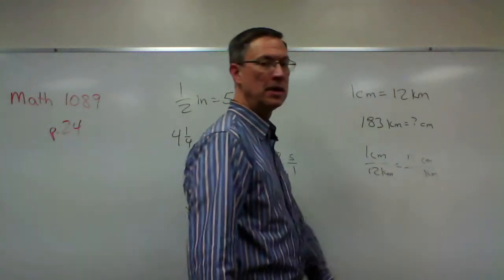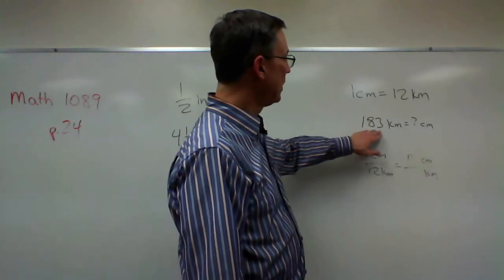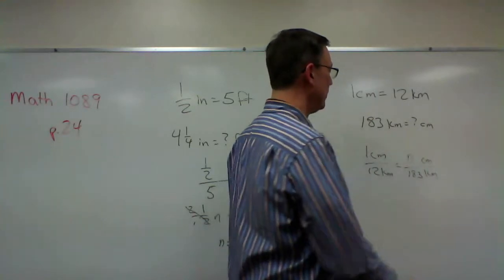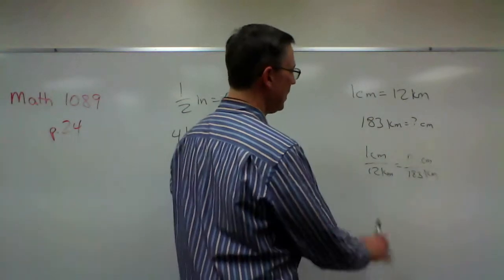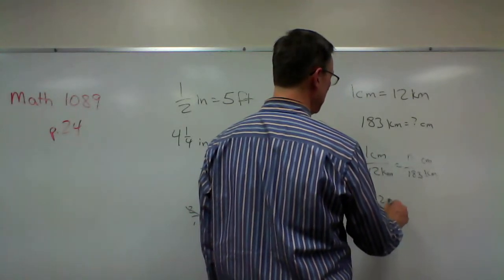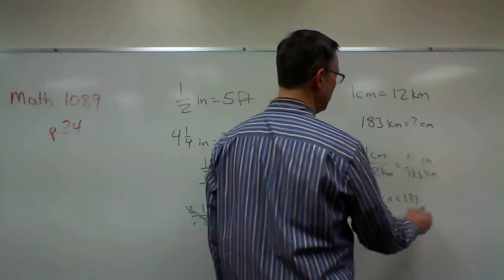So I'm going to put the n up here for the unknown number, but I do know that I have 183 down here for the number of kilometers. All right, so now I can ignore the units and just cross multiply. 12 times n equals 1 times 183. See how easy this method is? I love ratios, they're so easy.